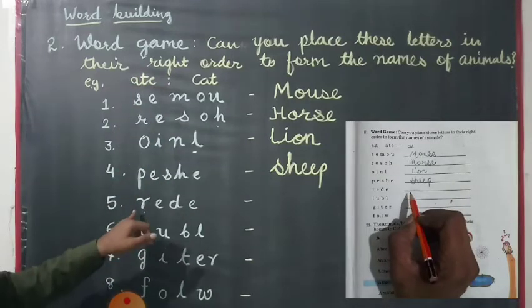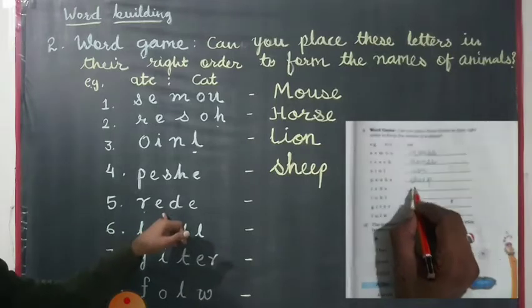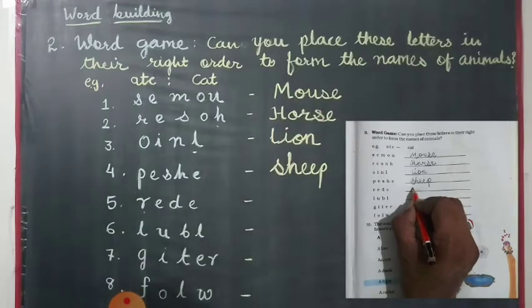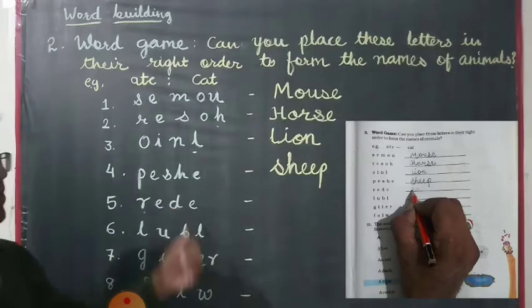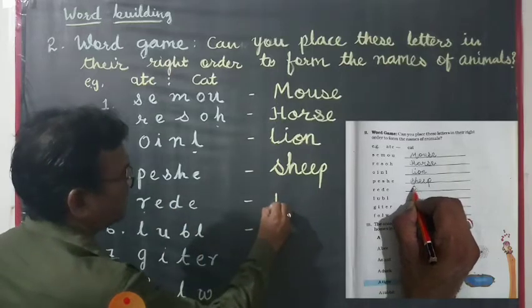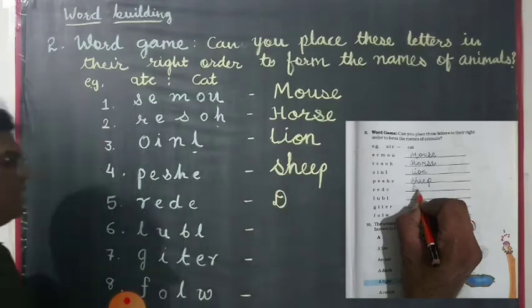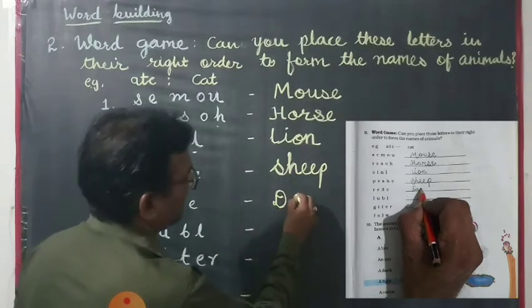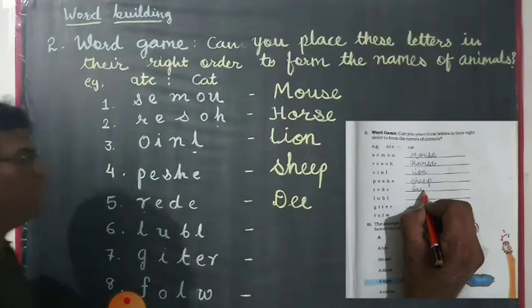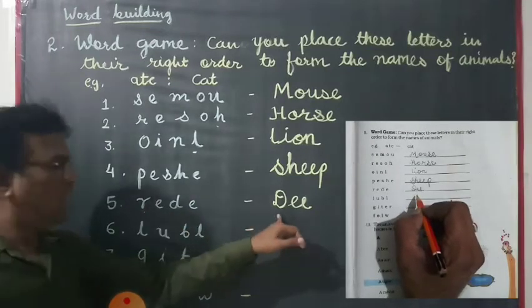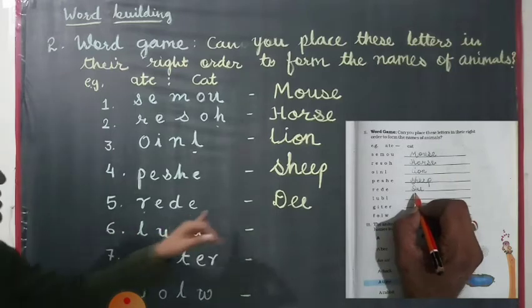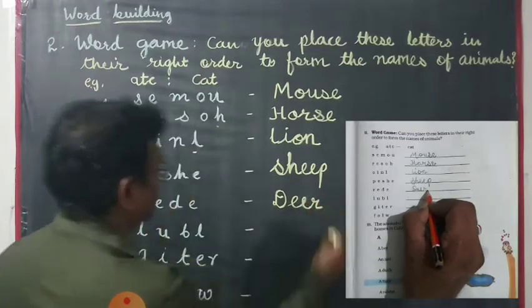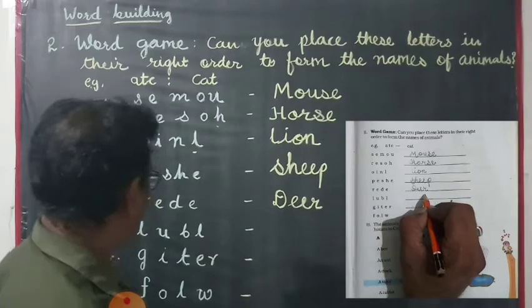When we rearrange the letters R, E, D, E — make the correct name of the animal. We write down D, double-E, R. The word is deer.